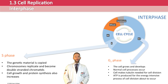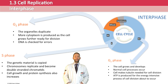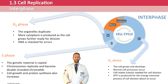Then you move on to the G2 phase. This is where you may get some organelles duplicating. More cytoplasm is produced because the cell is going to split in half soon, and you will need more cytoplasm for that. At this point also, the DNA is checked for errors.